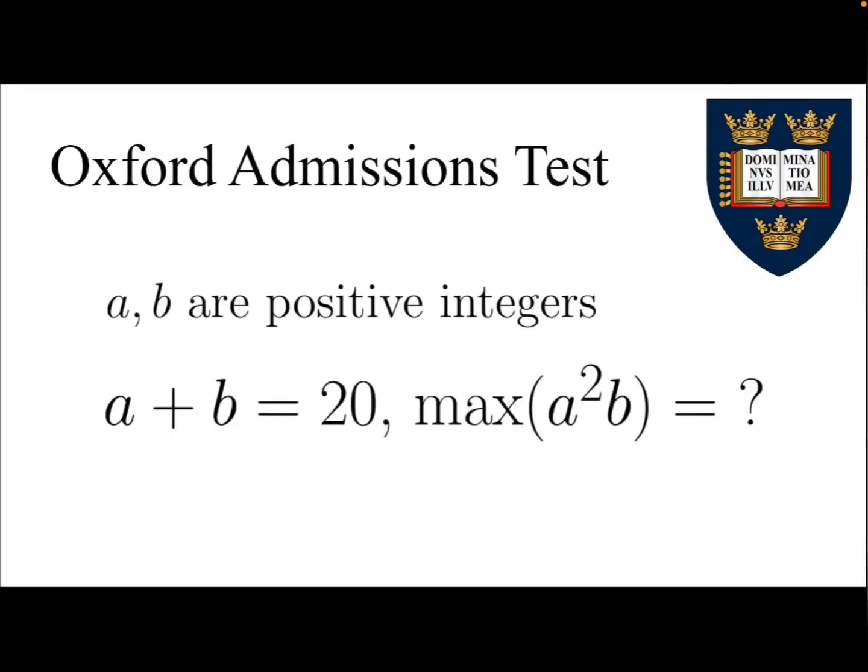In this video, we're going to solve a problem taken from the Oxford Mathematics Admissions Test. Given a and b are positive integers with sum equal to 20, find the maximum value of a squared times b.